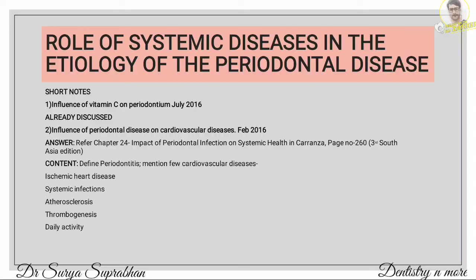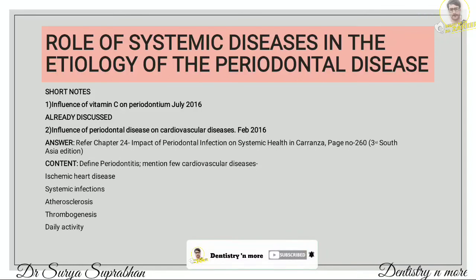Coming to the next chapter — role of systemic disease in etiology of periodontal disease, specifically the influence of periodontal disease on cardiovascular disease. Write what is periodontitis, and then mention cardiovascular diseases such as ischemic heart disease, systemic infection, atherosclerosis, thrombogenesis, and daily activity, with 2–3 lines about each. Find the answer in chapter 24, Impact of Periodontal Infection on Systemic Health, page number 260.